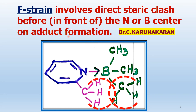What is F-strain? Let us recollect — we have already studied this. In this case, the steric clash is in front of the nitrogen and boron centers. F-strain involves direct steric clash before or in front of the nitrogen or boron center of the Lewis acid or base on adduct formation.